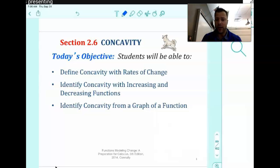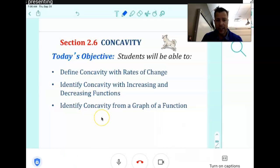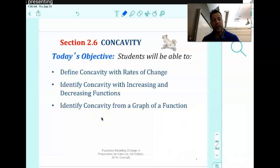Concavity really relates to the rate of change or the slope. And if we have a slope that is increasing, we're going to have something that's concave up. And when a slope is decreasing, we're going to be concave down.